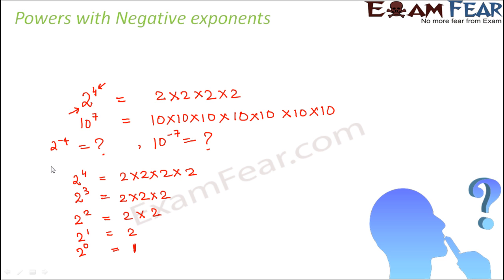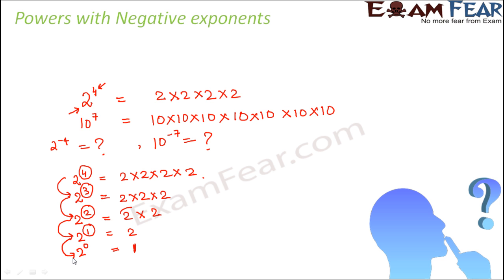Now what are you observing? At each step, the exponent is getting reduced by 1. Every time the exponent is reduced by 1, what is happening on the right-hand side? The entire thing is getting divided by 2. So here it was 4 times 2 — divide by 2, you get 3 times 2; divide by 2 again, you get 2 times 2. So at each step, every time your exponent reduces by 1, the result on the right-hand side is getting divided by 2.